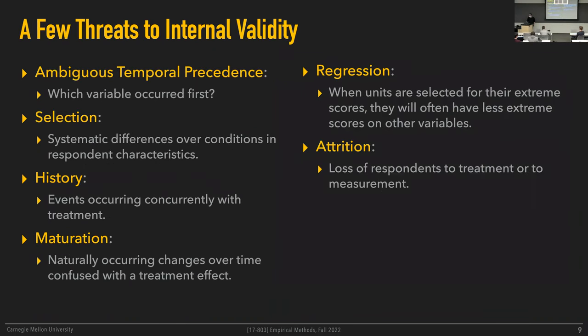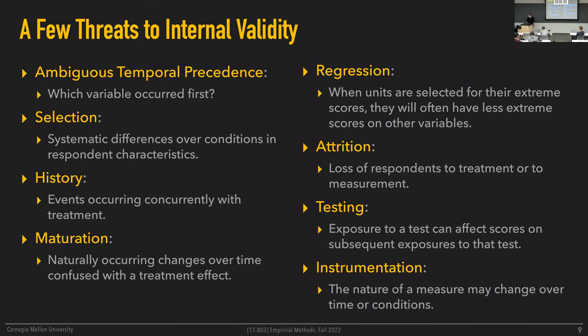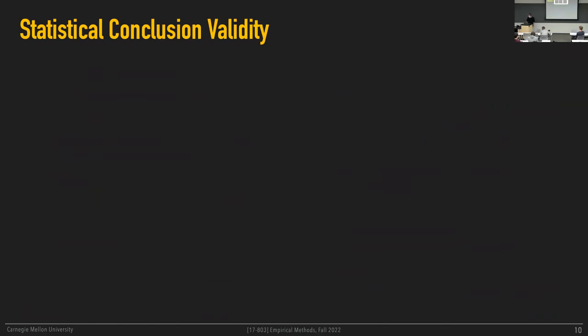Attrition is when you lose people mid-study — people drop out — and the people remaining may become fundamentally different between conditions. Testing effects: just exposure to a test can affect your scores on subsequent exposures, similar to history effects. Instrumentation is another issue. The book goes into even more detail about all of these threats to internal validity.